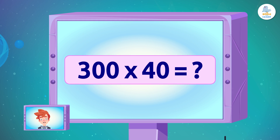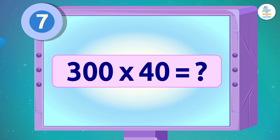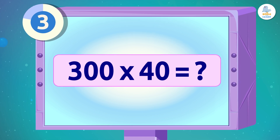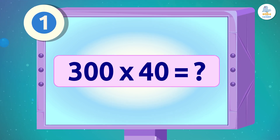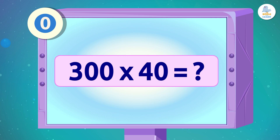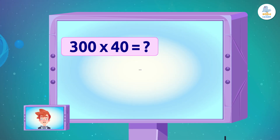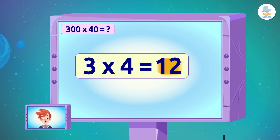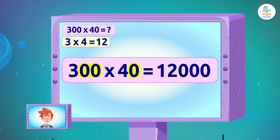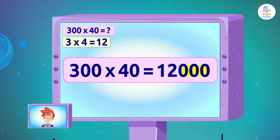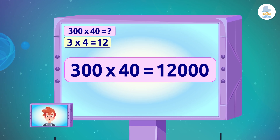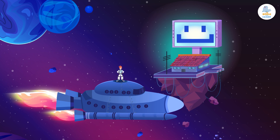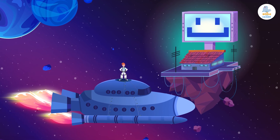How can we calculate 300 times 40 quickly? Here we go! First we'll multiply 3 times 4, which gives us 12, and then we'll count the zeros and add them to the end, so 12,000 is the result. Awesome, great job!